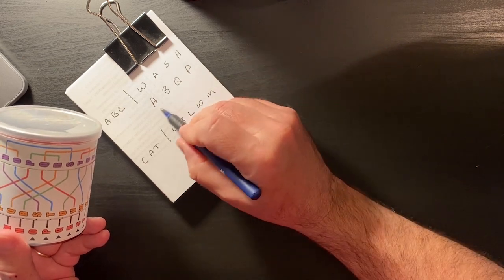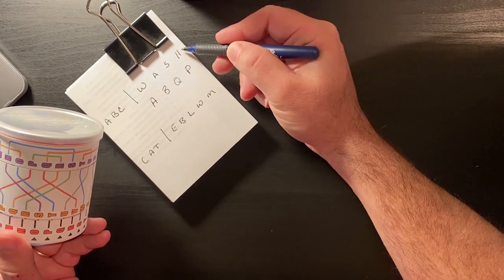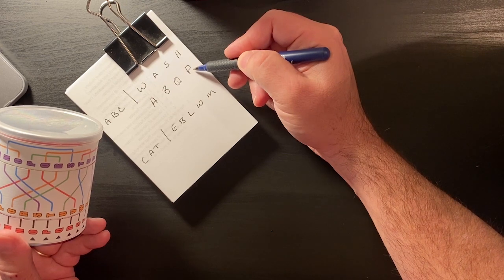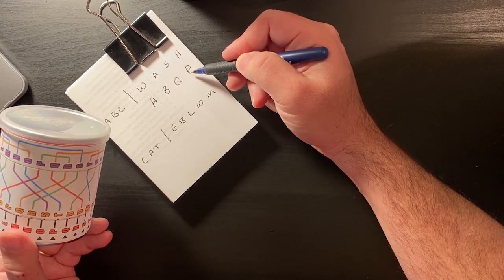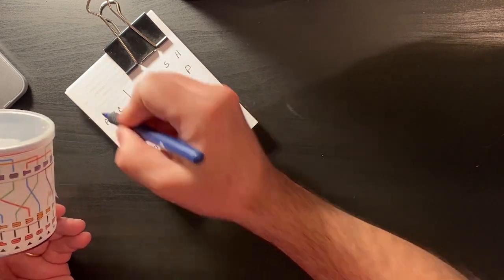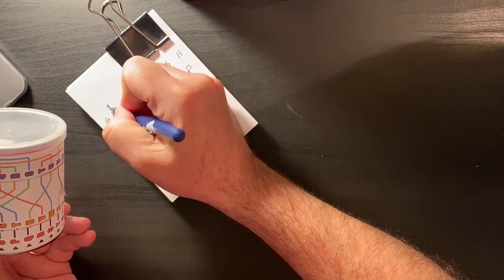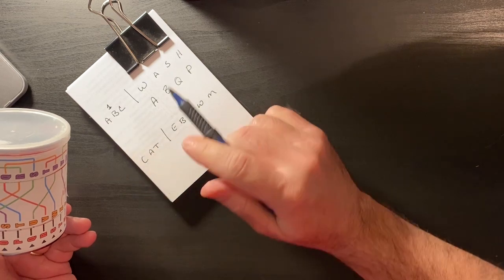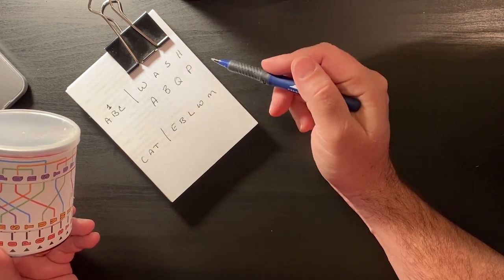Right? That's my ciphertext. WASH is my plaintext. ABQP is my ciphertext. Now I would pass this message to someone else with the rotor settings. And some way to identify this as a rotor number one. And they could decrypt this into WASH.